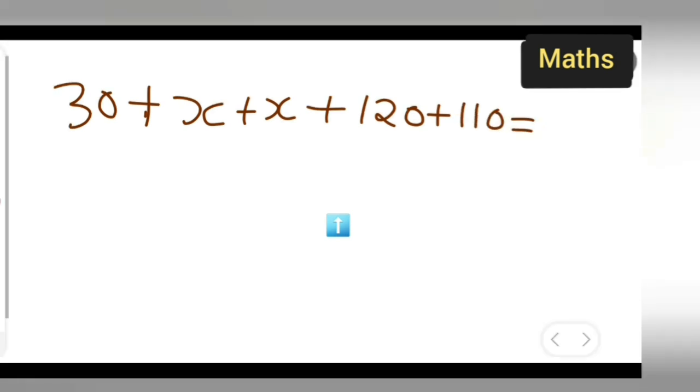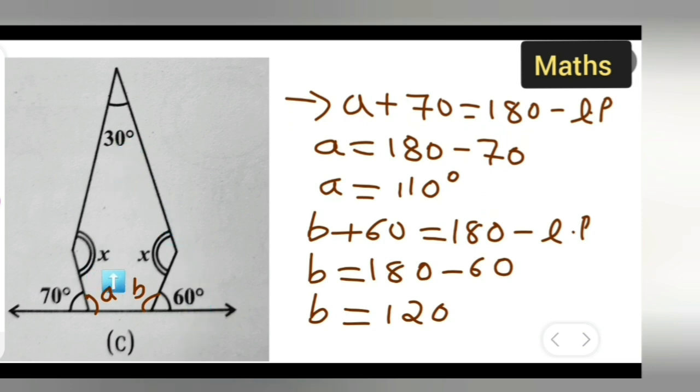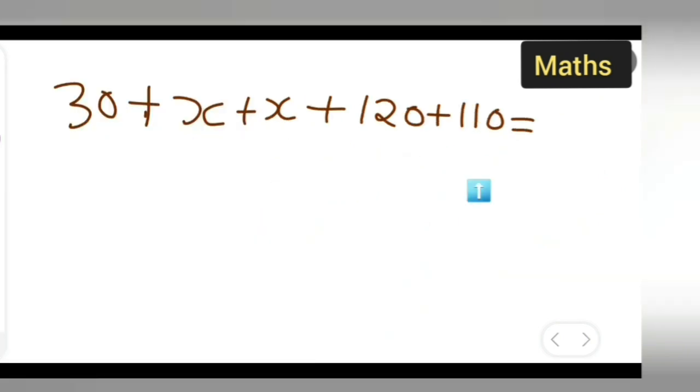How many sides are there? One, two, three, four, five. So it is a pentagon. What is the sum of a pentagon? It is 540. We know that, right? The sum of a pentagon, a five-sided figure, is 540.